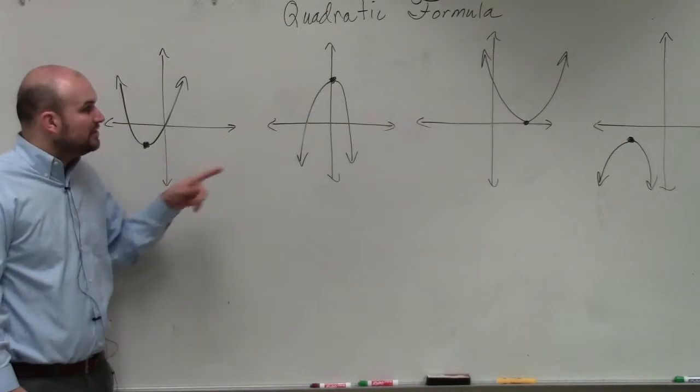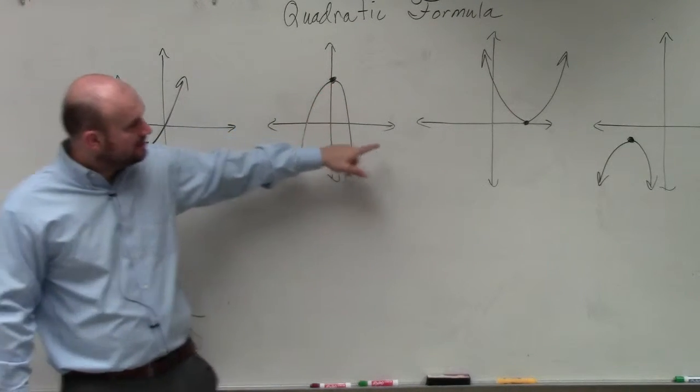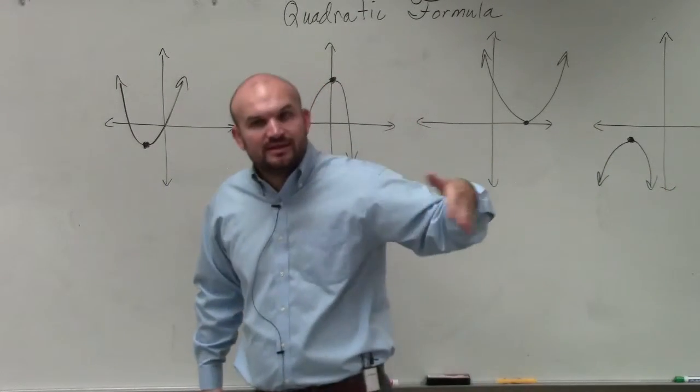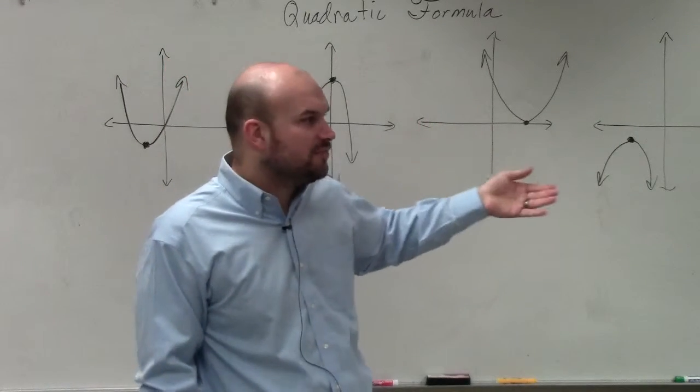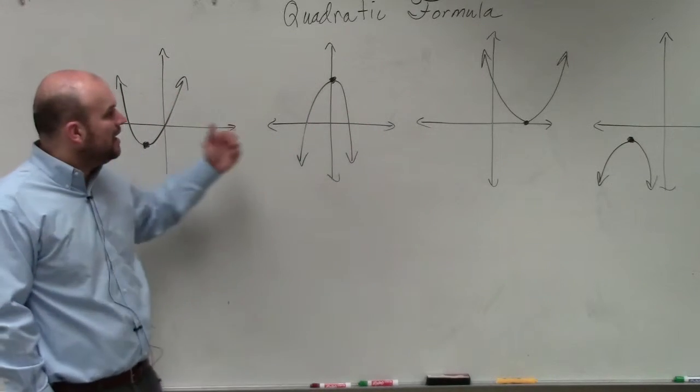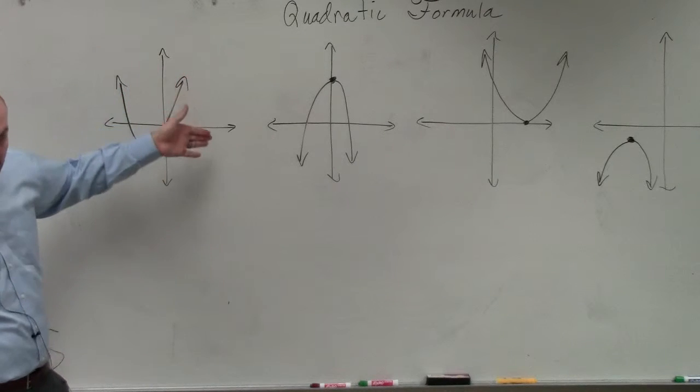When the graph opens down, that vertex is the maximum point. Minimum, maximum. So knowing that the vertex was one way we used to graph it using vertex form. But it was also important as far as finding the maximum height or finding the minimum height of the parabola. So that's what we have previously discussed.